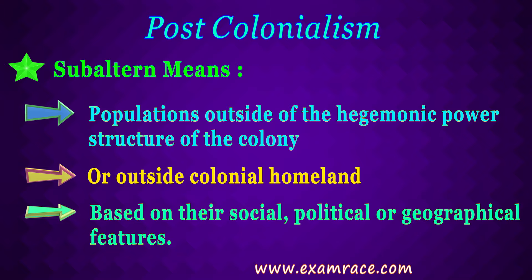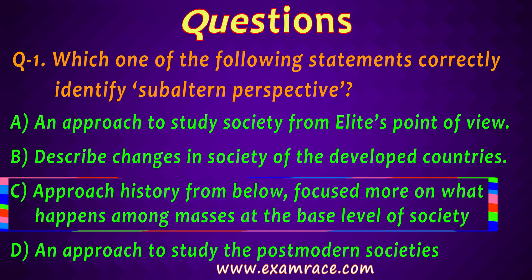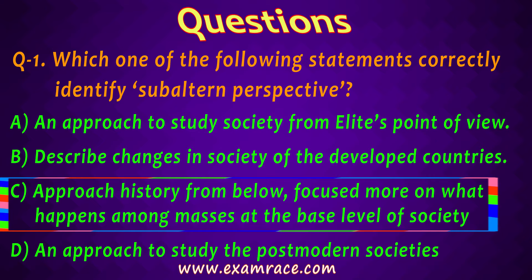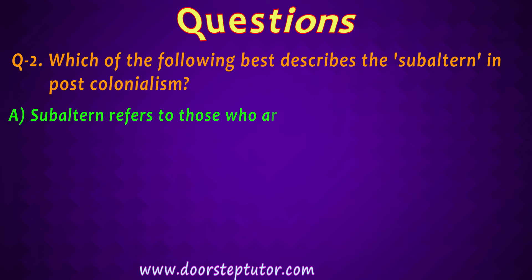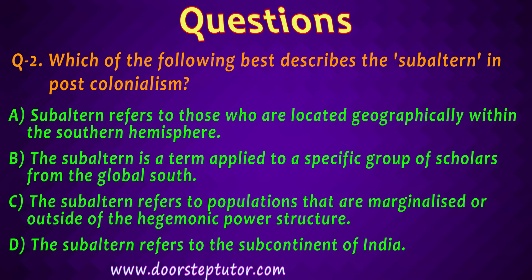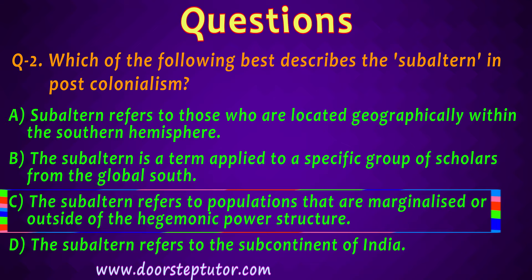Now let us discuss some questions. Question one: which of the following statements correctly identifies the subaltern perspective? Option C says 'this approach studies history from below.' Yes, that is correct — when you are talking about the masses, you are studying history from below, focused on what happens among the masses at the base level of society. The answer is option C. Question two: which of the following best describes subaltern in post-colonialism? Option C states 'refers to populations that are marginalized or outside the hegemonic power structures.' The answer is option C.